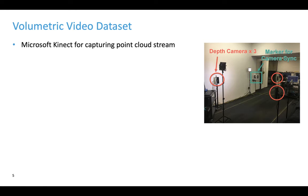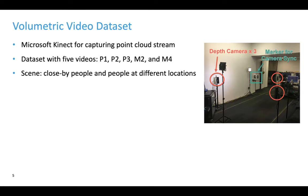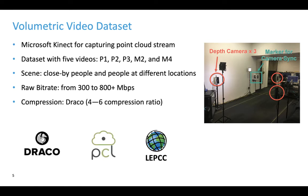This figure shows a setup of three depth cameras and a marker for synchronizing video streams. We constructed a diverse dataset with five videos. P1, P2, and P3 captured scenes with close-by people. M2 and M4 captured scenes with people at different locations. These numbers are the number of people in the videos. The raw video bitrate ranges from 300 Mbps to higher than 800 Mbps. We evaluated the compression performance of several open-source libraries and selected Draco from Google to compress these videos. It achieves a lossless compression ratio from 4 to 6. The partitioning overhead could be as high as 67%, which measures the increase of compressed video size caused by partitioning, because it may affect compression efficiency.